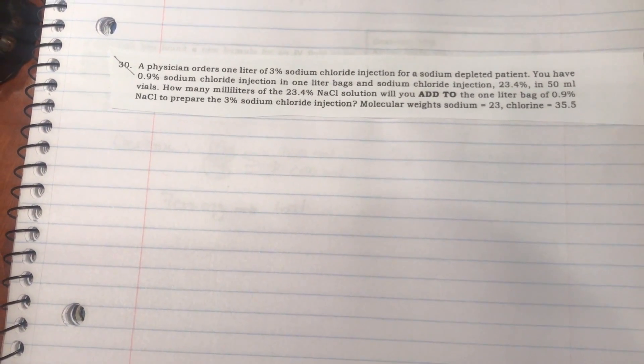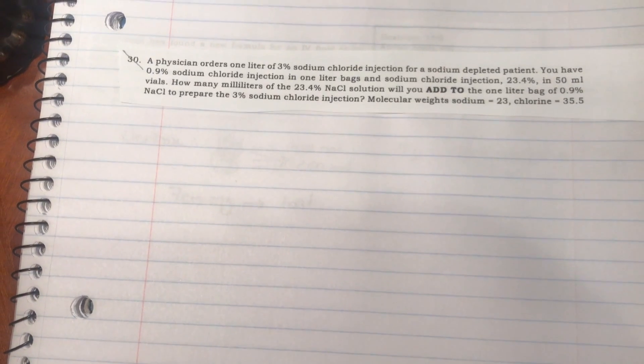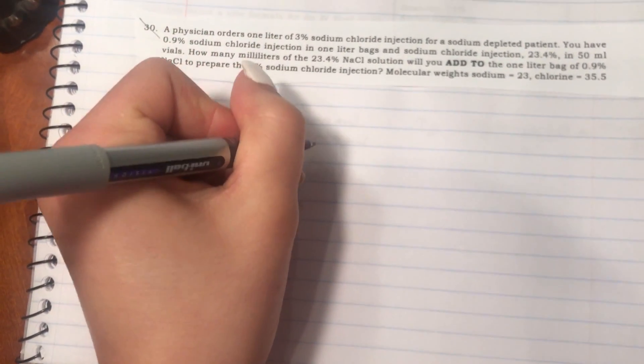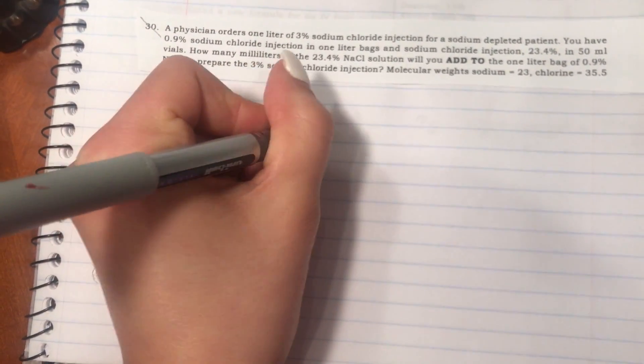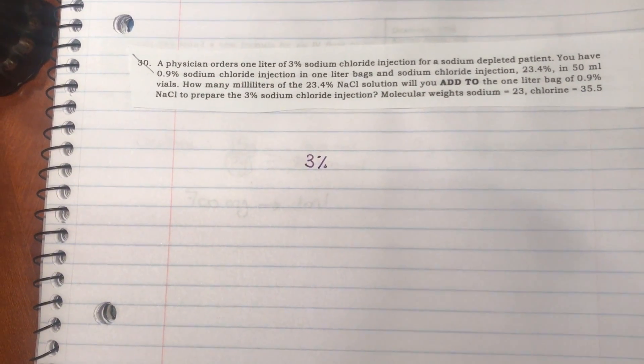Now, as we said, let's look at what percentage you are required to prepare. You are required to prepare a 3% sodium chloride, so we will start with that. We'll write the 3% here, and this is the requirement for you to prepare.